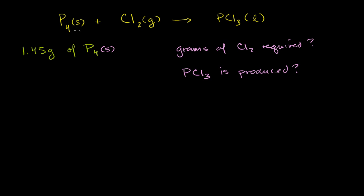We know that solid phosphorus will react with chlorine gas to spontaneously produce liquid phosphorus trichloride. We're told that we have 1.45 grams of solid molecular phosphorus, and we're asked how many grams of chlorine is required to use up all of the phosphorus, and how many grams of phosphorus trichloride is going to be produced.